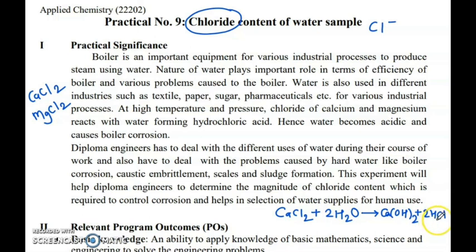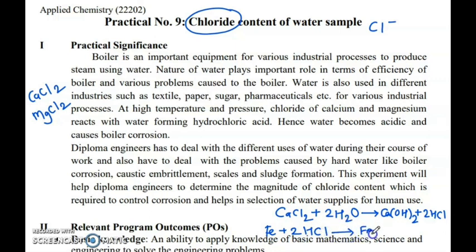Your boiler will become weak if corrosion occurs. Fe reacts with 2HCl to form FeCl₂, ferrous chloride, and hydrogen gas is evolved. This shows there is decay and destruction of iron from the boiler material.